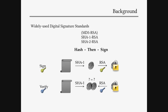Widely used digital signature standards like SHA-1 RSA, SHA-2 RSA, and before MD5 RSA are all built upon the hash-then-sign principle, where if you want to sign a message, you first hash it, then this hash is actually signed with public key cryptography — RSA with a private key. To verify, basically anybody can do that by comparing a recomputed hash from the message and by recovering the encrypted hash from the signature using the public key.